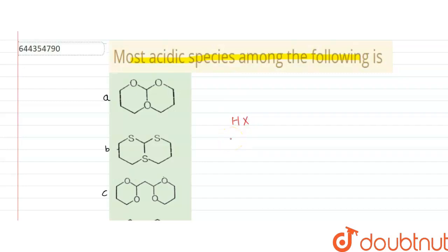HX. We know that acidic properties are shown by H positive ion. So basically if this compound breaks down to give us H positive and X minus, then this H positive over here